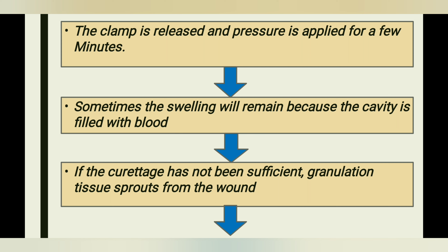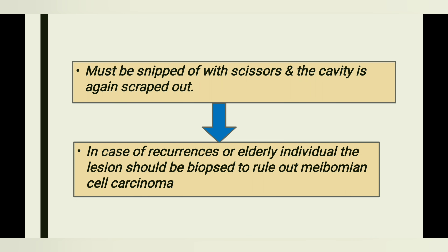After surgery, the clamp is released and pressure is applied for a few minutes to allow clot formation. Sometimes swelling remains because the cavity fills with blood. If curettage has not been sufficient, granulation tissue may sprout out and should be snipped with scissors, and the cavity scraped again. In cases of recurrence or in elderly individuals, the lesion should be biopsied to rule out meibomian cell carcinoma.